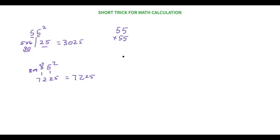Now try this one with me: 75 square. First, five square is 25. Then take 7 and its consecutive number 8, so 7 times 8 is 56. Our answer is 5625. Isn't it very easy?